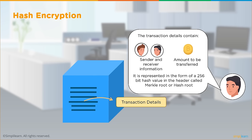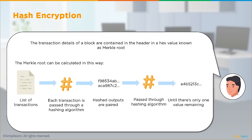The transaction details represent the sender and receiver exchanging bitcoin. These are represented in the header as a 256-bit hash value called the Merkle root. The Merkle root is the hash of all transactions structured in a Merkle tree — a kind of binary tree — and the hash value of the root node is the Merkle root hash. Each transaction is passed through a hashing algorithm, all resulting hashes are paired and hashed again, until one root value remains.